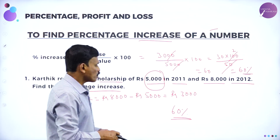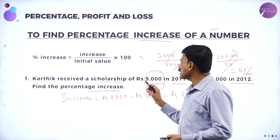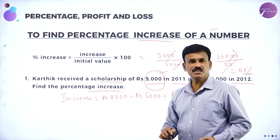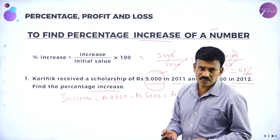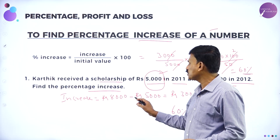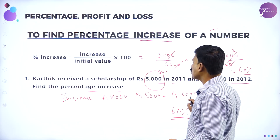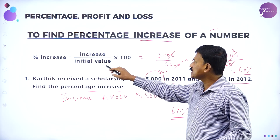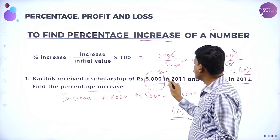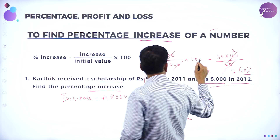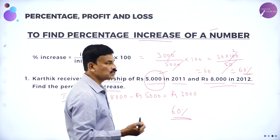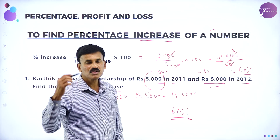So here, Karthik receives a scholarship of 5,000 rupees in 2011 and 8,000 in 2012. The difference is 3,000. Using the formula — percentage increase equals increase divided by initial value into 100 — that is 3,000 divided by 5,000 into 100. The zeros cancel, giving 30 into 100 divided by 50, which is 30 into 2 equal to 60. So the increase percent is equal to 60 percent.